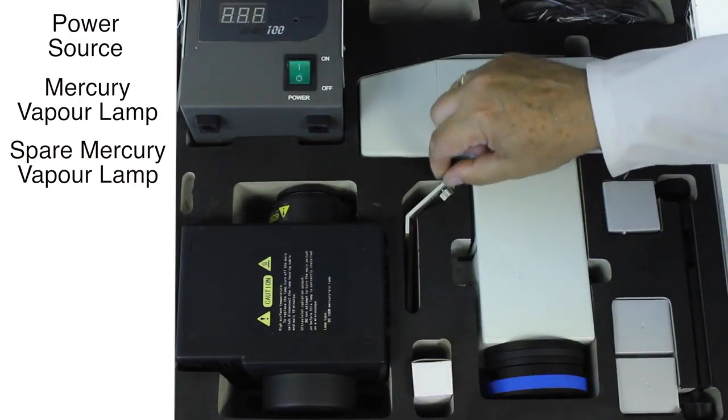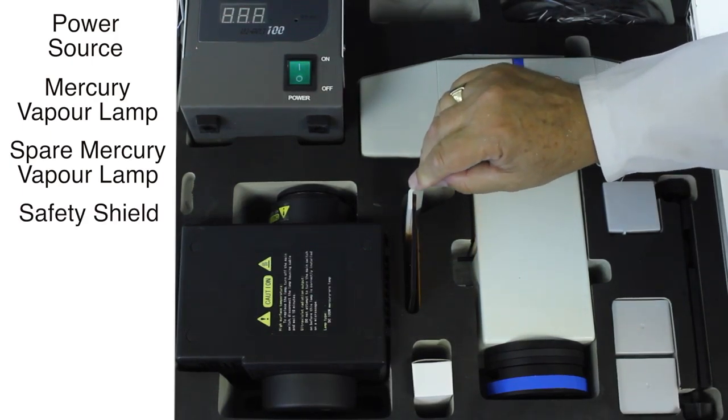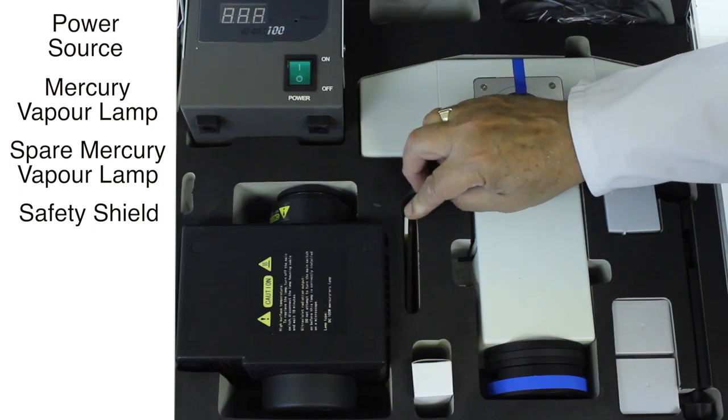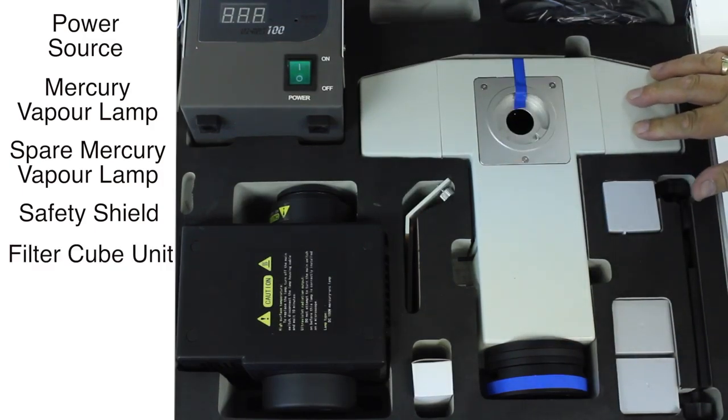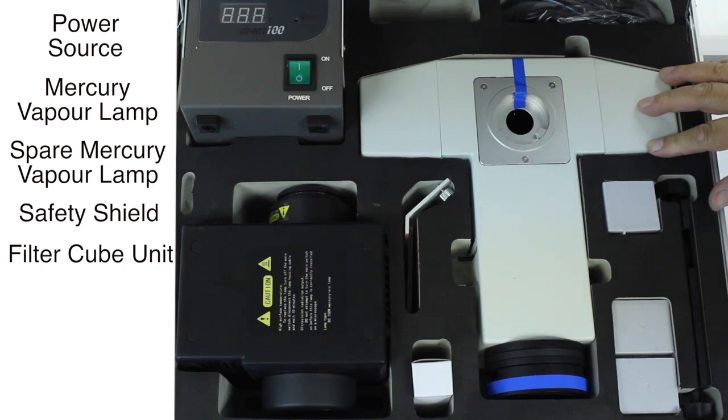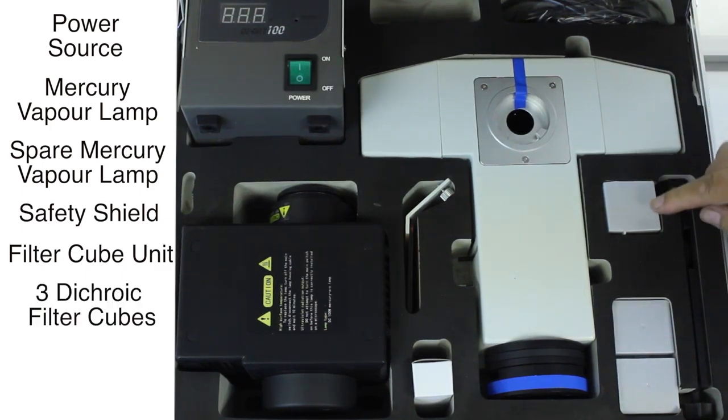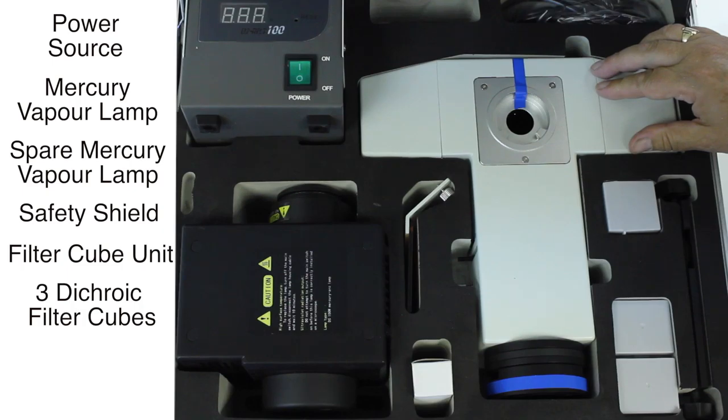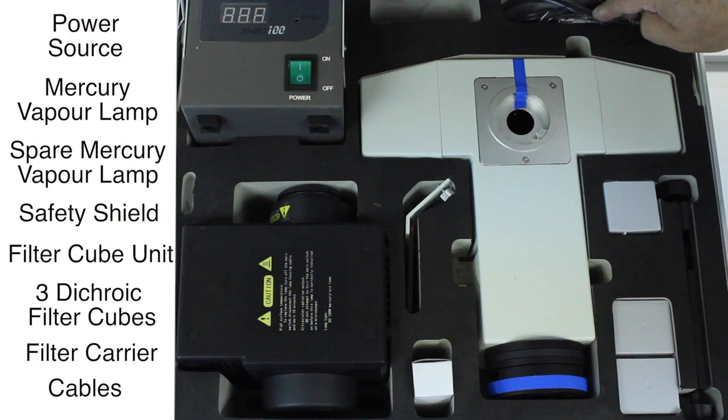It's a spare mercury vapor lamp, and there's the safety shield to prevent operatives getting ultraviolet light in their eyes. This piece here is the incident body that houses the dichroic filter cubes, which are in these three pots, although probably they will have been fitted into this component for you. Then there's a filter carrier here and the necessary cables there.